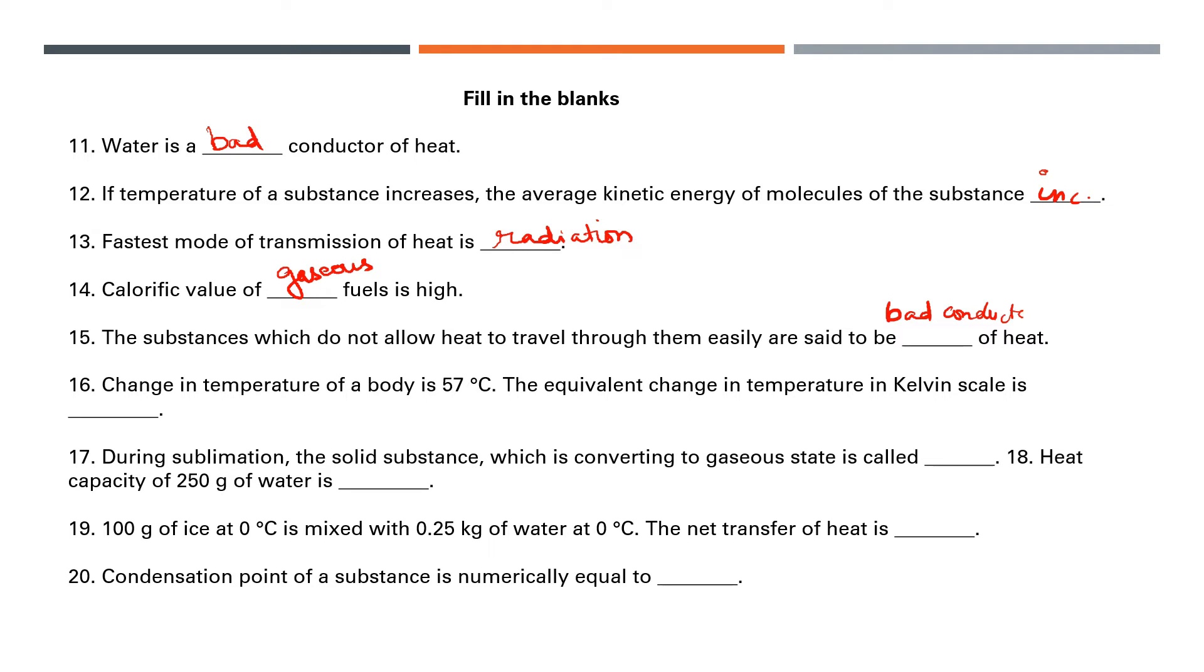The change in temperature of a body is 57 degrees centigrade. The equivalent change in Kelvin scale is 57 K. During sublimation, the solid substance which is converting to gaseous state is called sublimation. Heat capacity of 250 grams of water is 250 calories per centigrade. One hundred grams of ice at zero degrees mixed with 0.25 kg of water at zero degrees, the net transfer of heat is zero. Condensation point of a substance is numerically equal to boiling point.